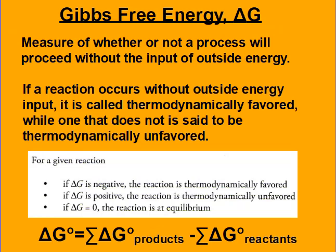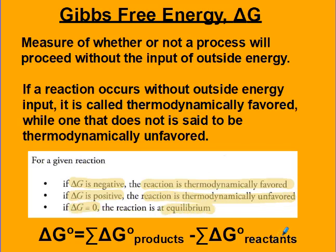Gibbs free energy, or delta G, is a measure of whether or not a process will proceed without the input of outside energy. If a reaction occurs without outside energy input, then it's thermodynamically favored, while one that does not is said to be unfavorable. If delta G is negative, the reaction is thermodynamically favorable. If delta G is positive, the reaction is thermodynamically unfavored. If delta G is zero, the system is simply at equilibrium.